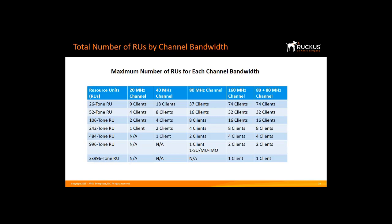The AP may allocate the whole channel to only one client at a time, or it may partition the channel to serve multiple clients simultaneously. For example, for basic 20 MHz bandwidth, nine 26-tone RUs can be used, meaning you can have up to nine users, but only four users with 52-tone RUs.